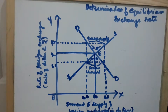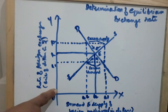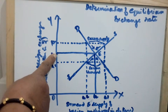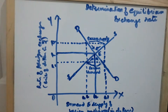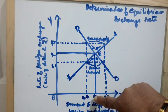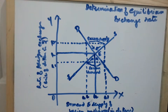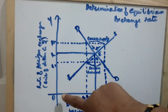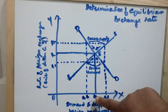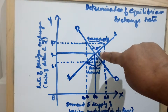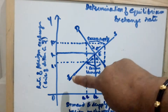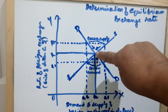Both demand and supply curves intersect at point E, which is the equilibrium point. The equilibrium exchange rate is determined at OR and the equilibrium quantity is determined at OQ. So at OR, OQ is the demand and supply, at point E where the demand curve and supply curve of foreign exchange intersect each other.